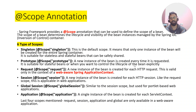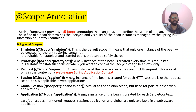Now for prototype scope — every time a new instance will be created whenever you ask the Spring IoC container for that bean instance. It is suitable for stateful beans and when you want to control the lifecycle of a bean explicitly. To achieve this, we use @Scope and provide the value as 'prototype', telling the Spring IoC container that every request should create a new instance for that particular bean.